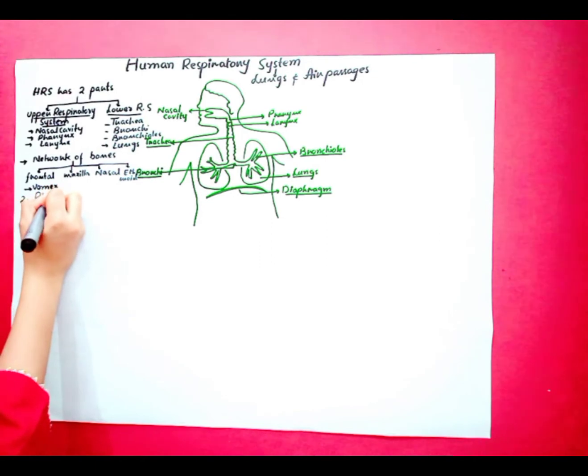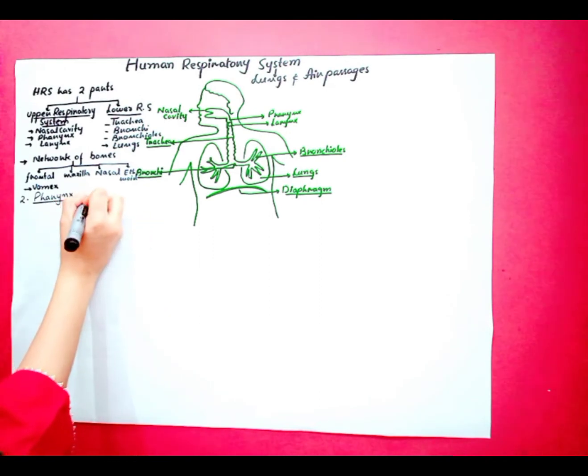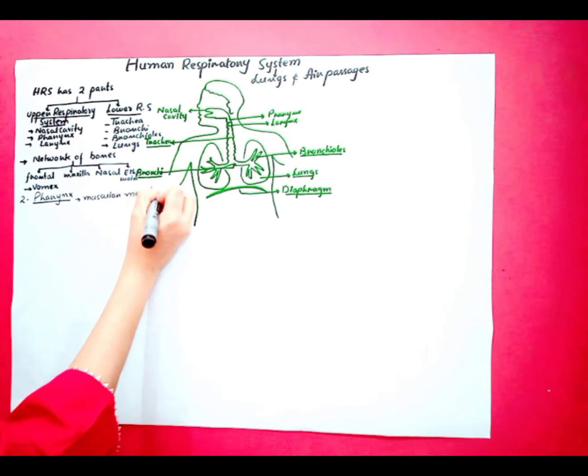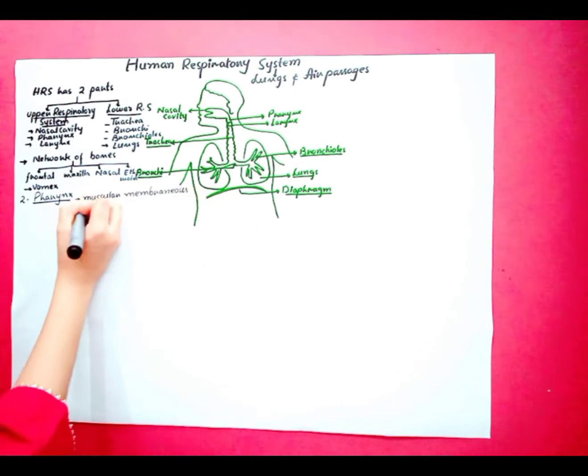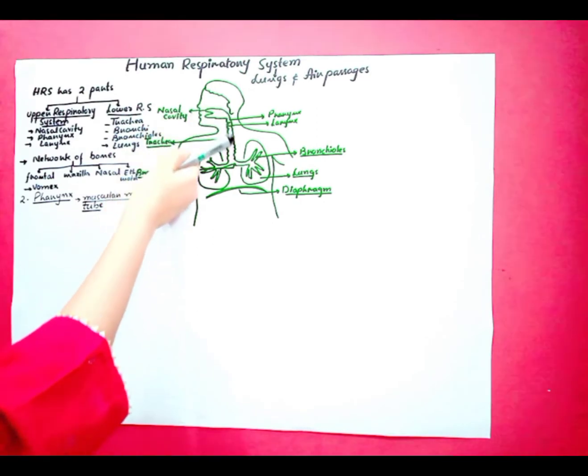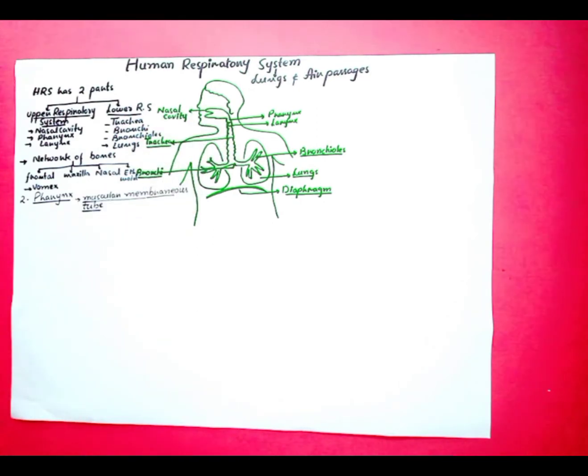Second, pharynx. This pharynx is a muscular membranous tube. It serves both as a respiratory and digestive function. It acts as a passageway of air and food. The pharynx is further divided into three parts: nasopharynx, oropharynx, and laryngopharynx.